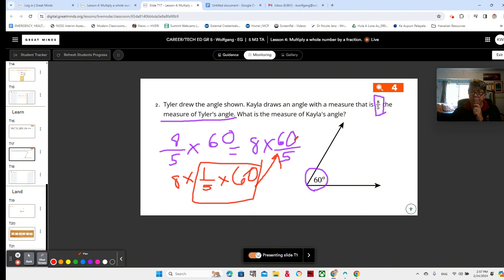What is 60 divided by 5? 60 divided by 5 is 12. You can use your multiplication tables for that. You don't really need to write it out because this is a 12 fact. So now we have 8 times 12, and that is 96.